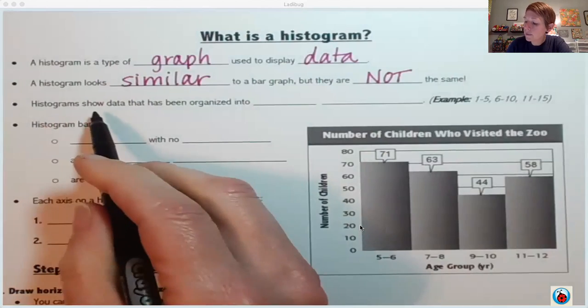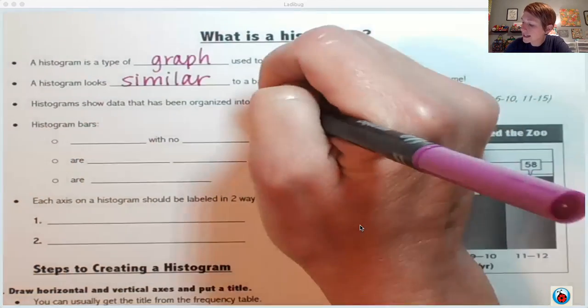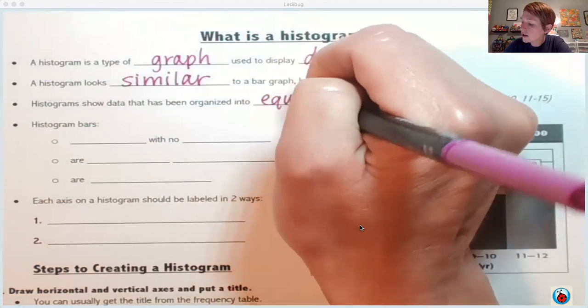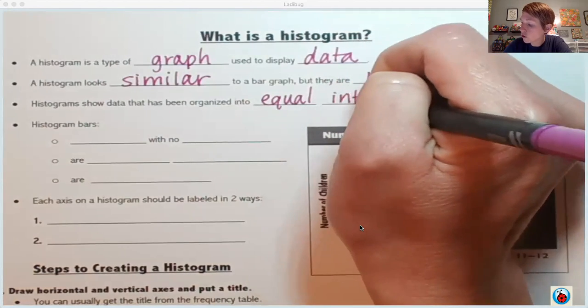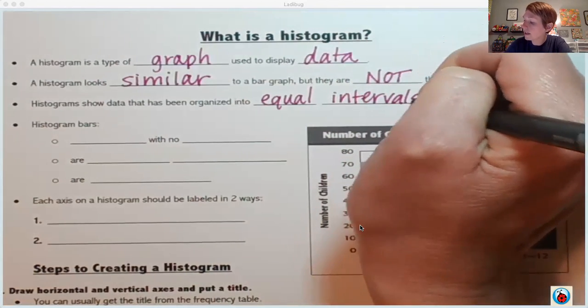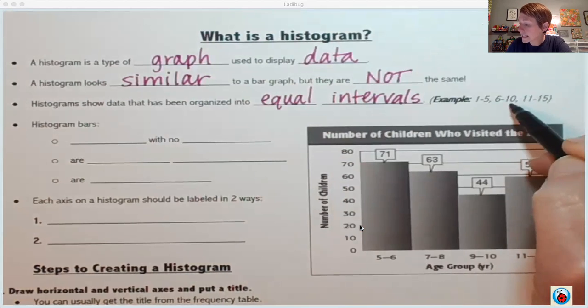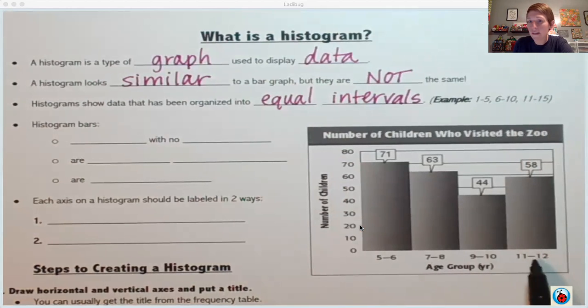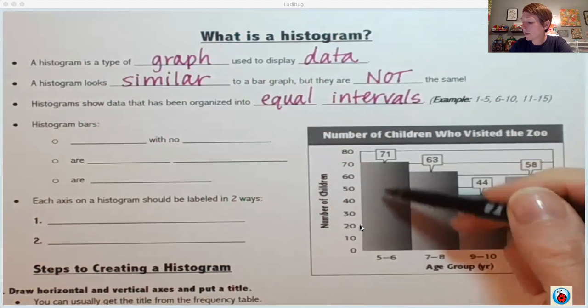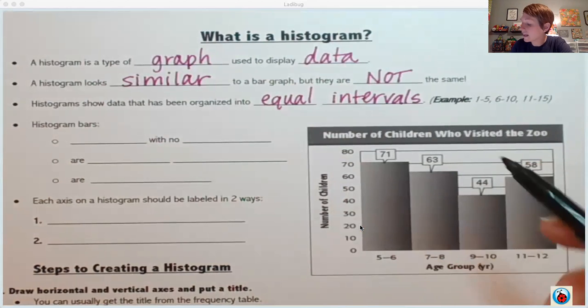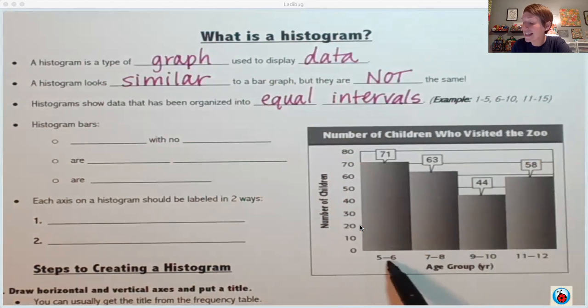First up, histograms show data that has been organized into equal intervals. So the example at the end of this line: 1 to 5, 6 to 10, 11 to 15. You see the intervals down here, 5 to 6, 7 to 8. So these bars aren't representing just one thing. They're representing data within this interval or within this range.